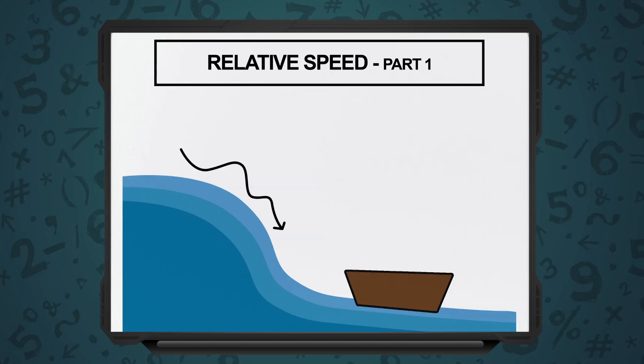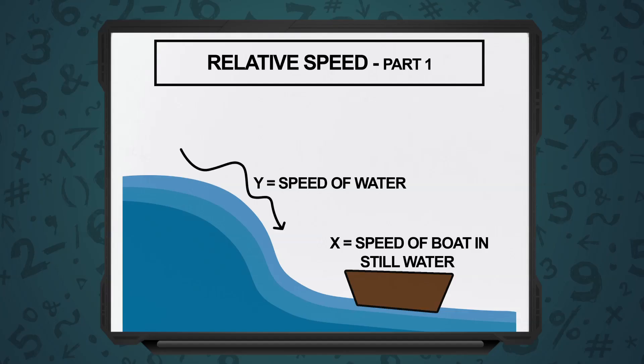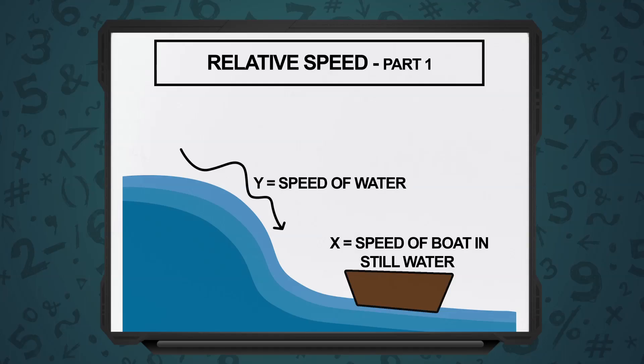Now, these are very common problems that keep coming in competitive exams and in high school exams. So, this is where relative speed comes into the picture. You have, let us say, a boat which has a certain speed x in still water, but this boat is not moving in still water — it is moving across a stream.